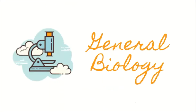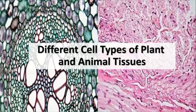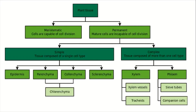In this video of General Biology, we will be discussing the different cell types of plants and animal tissues. So first, let's go to plant tissues. The plant tissues can be divided into two: we have the meristematic tissues and the permanent tissues.